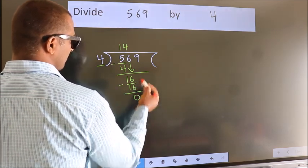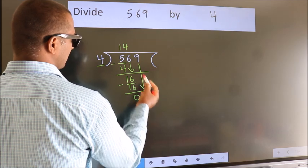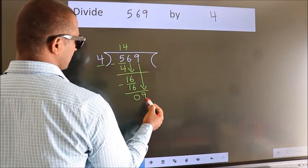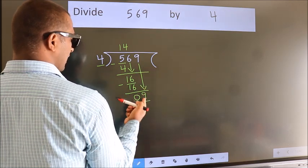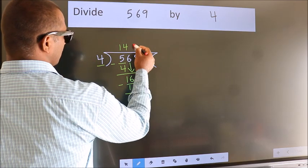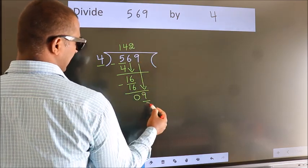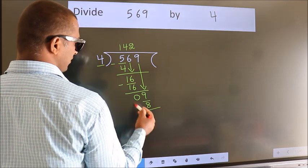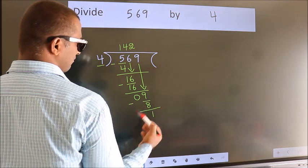After this, bring down the beside number. So 9 down. So 9. A number close to 9 in 4 table is 4 twos, 8. Now we subtract. We get 1.